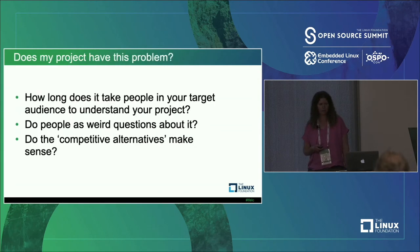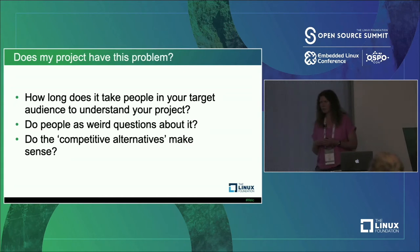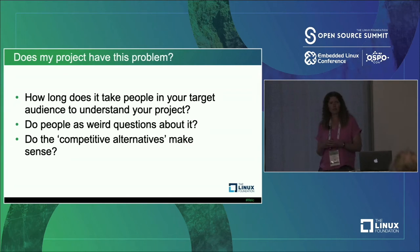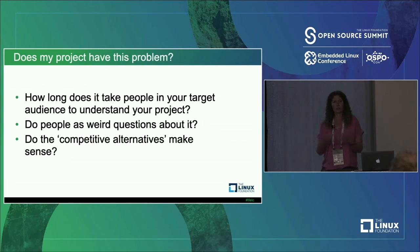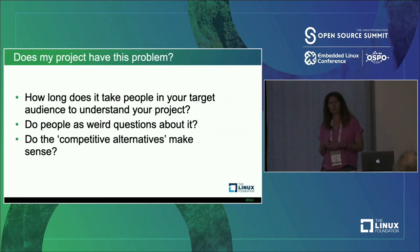So how do you know if this might be a problem? The first warning sign is really straightforward. If you're having a conversation with somebody who you think should be your target user — not your mother-in-law, but someone who should understand what it's all about — and it takes them 15 minutes or half an hour of conversation to understand what your project does, that's a sign that maybe the problem is with you and your project, not with them.